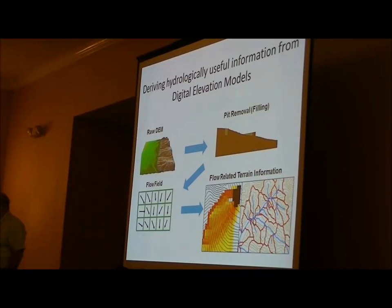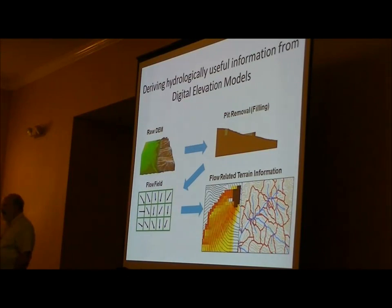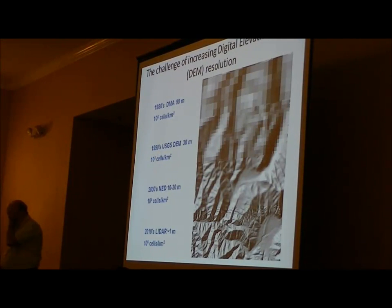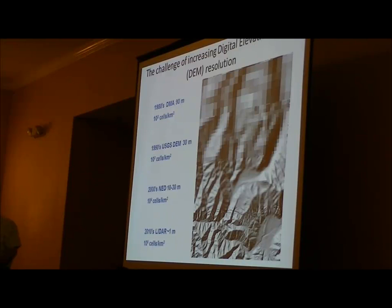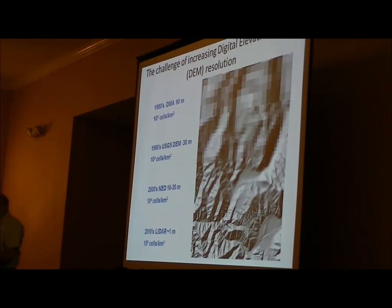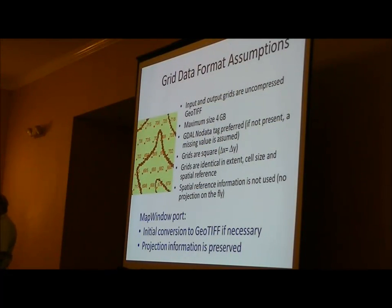You start with just the digital elevation map, no other inputs, and you end up with the thing on the far right, showing where the streams are and the areas that drain into each stream reach. Now one of the challenges is that digital elevation maps are getting much, much bigger, so the files, if you want to delineate large areas, also get very large. We have to manage that, which means you need a lot more memory and a lot more speed.